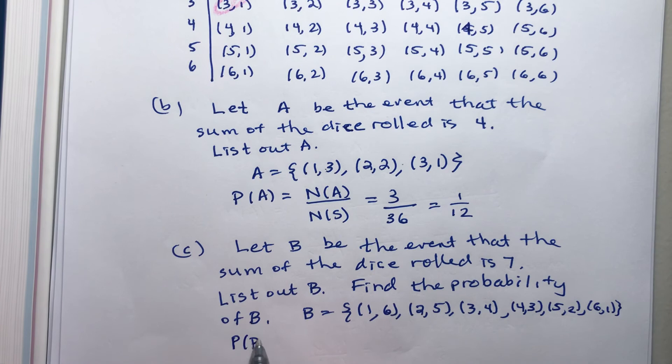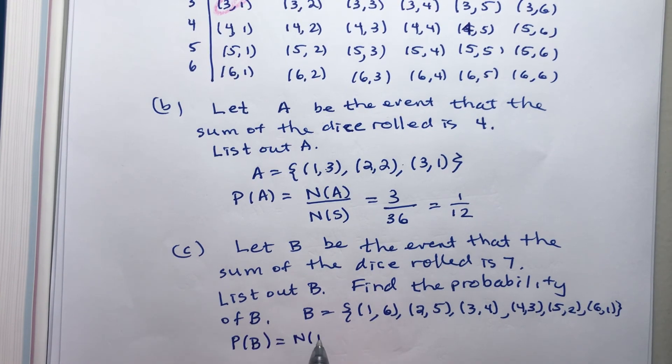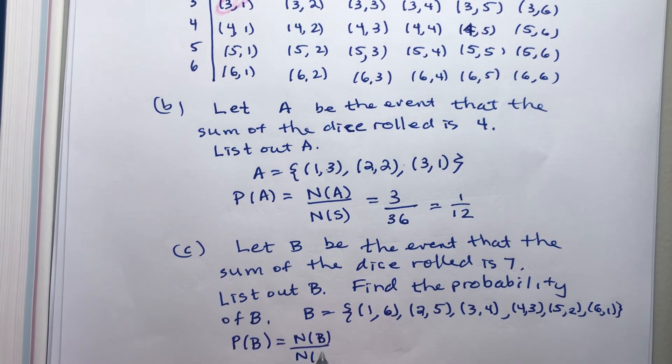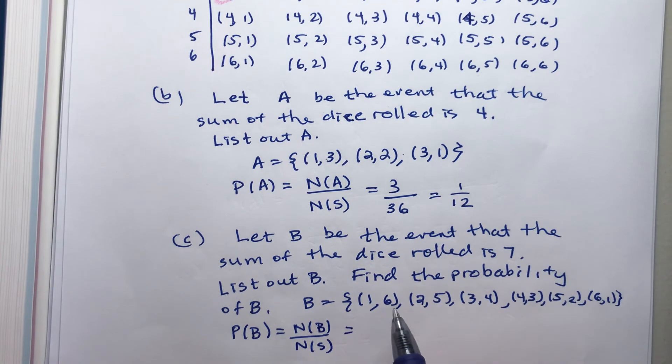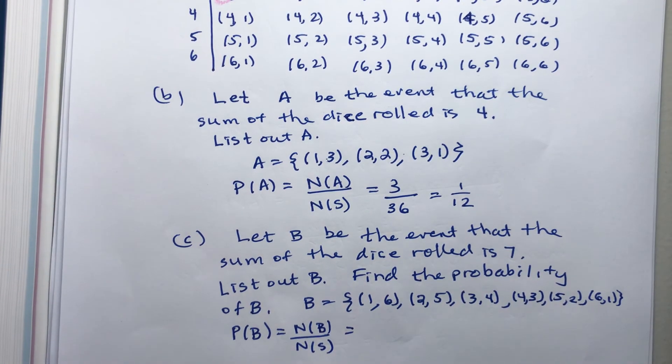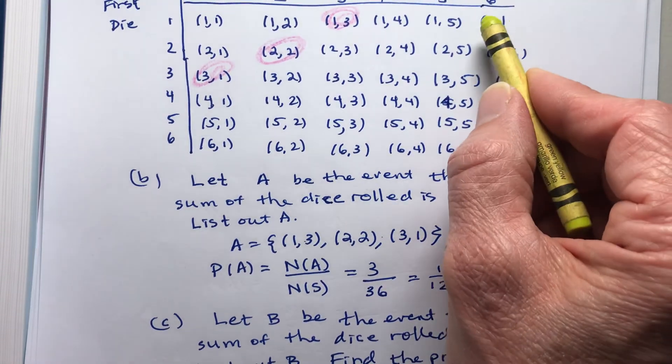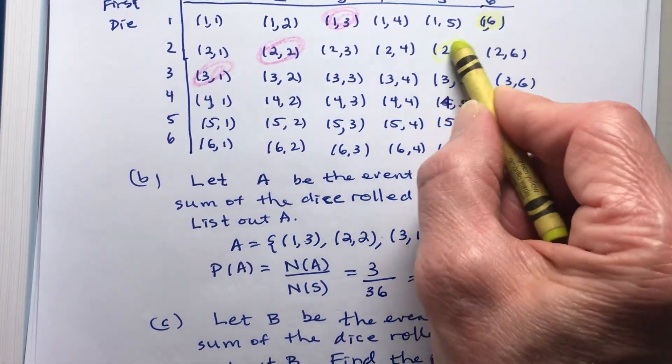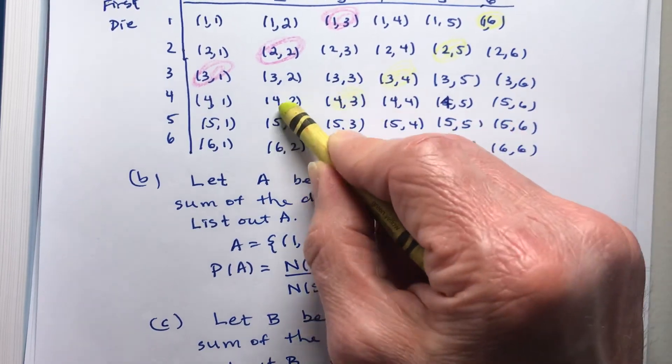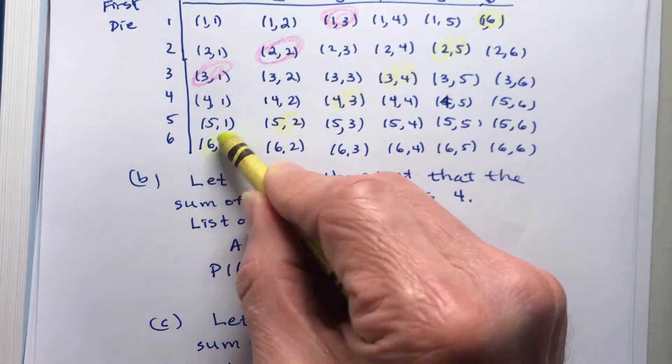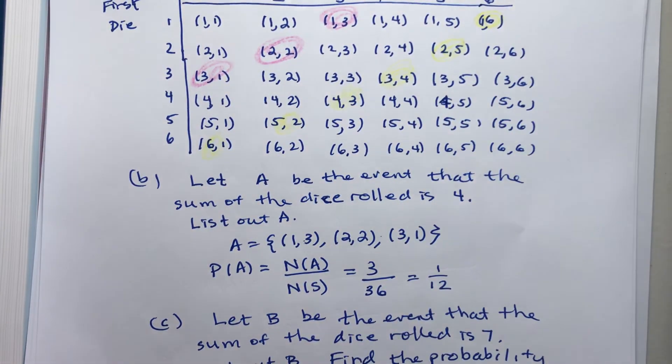So then the probability of B is equal to the number of elements in B divided by the number of elements in S. So let's go ahead and color it in our picture above here. So I have (1,6), (2,5), (3,4), (4,3), (5,2), (6,1).